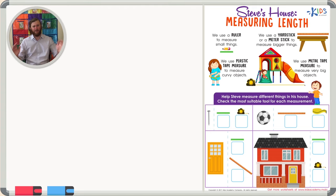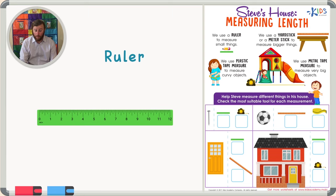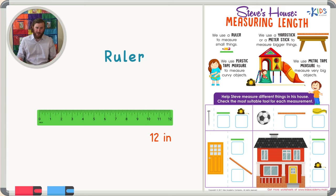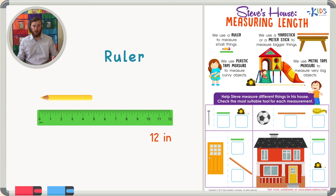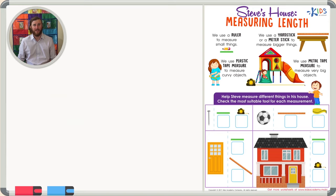The first tool I'd like to talk to you about is the ruler. A ruler is 12 inches long and is used to measure smaller objects. When we use the ruler we want to make sure that objects we measure are smaller than the ruler, so that way we can measure them really accurately.